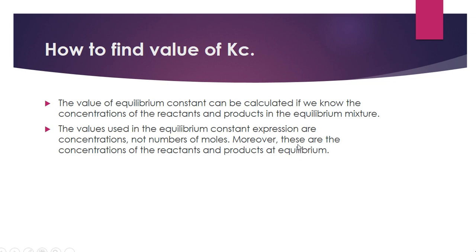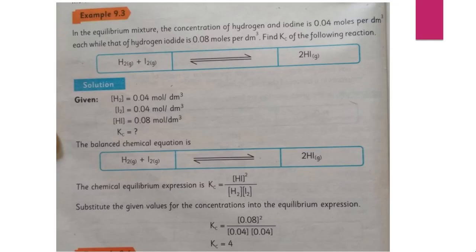The concentrations of reactants and products will be given at equilibrium state. You can then put the values in the chemical equilibrium expression and find out its equilibrium constant.